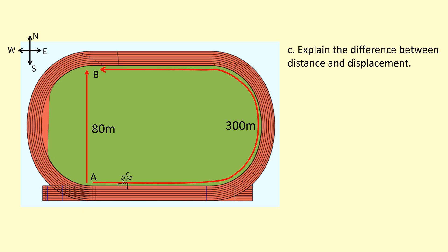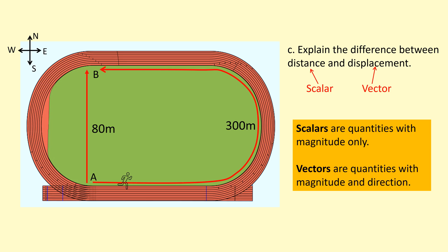So what's the difference between distance and displacement? Distance is a scalar, displacement is a vector. Scalars are quantities with magnitude only, basically they only have size. A vector however is a quantity with magnitude so it has size, a number associated with it, but also has a direction.